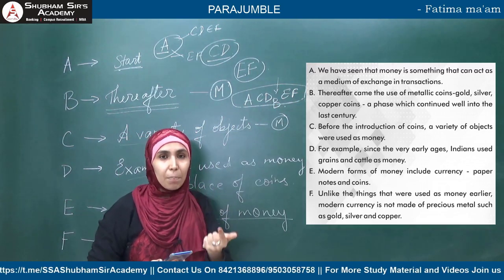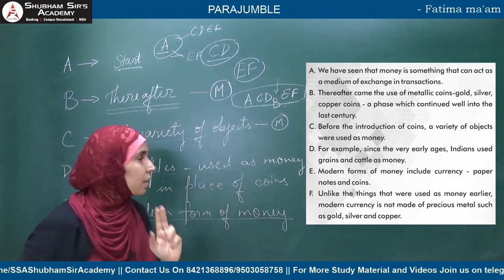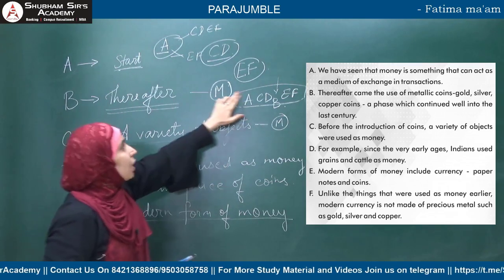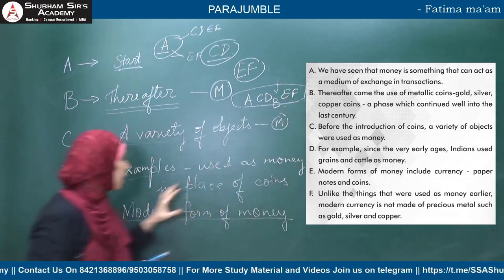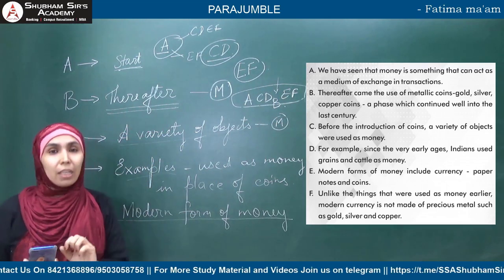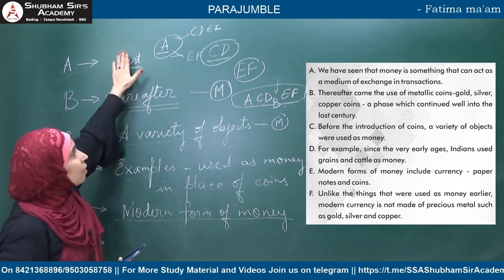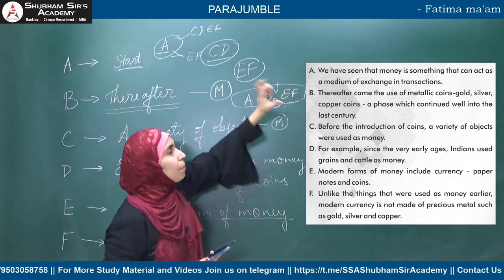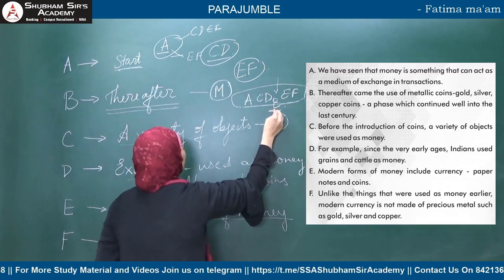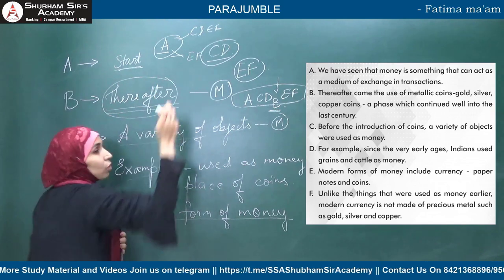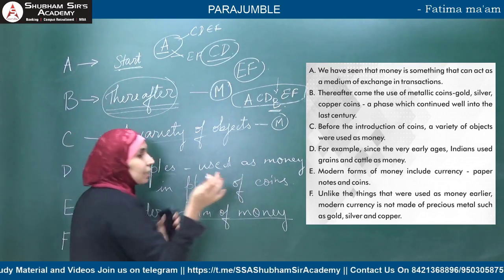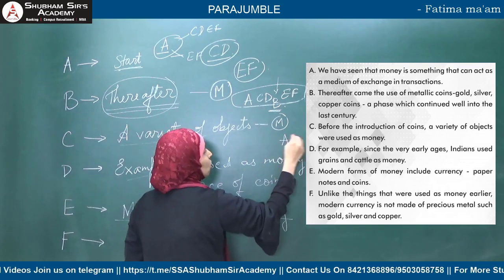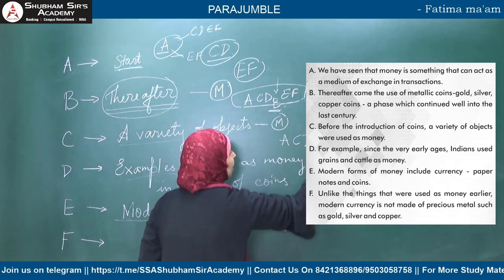Understood? Let me repeat. We made a link between C and D because of 'variety of objects.' E and F are linked because both speak about the modern form of money. A is the start because it introduces the concept of money. C-D pair comes because it's about the past form; E-F comes after because it's the modern/present form. B was sandwiched between D and E because 'thereafter' — after grains and cattle, coins came. The correct answer is A, C, D, B, E, F.